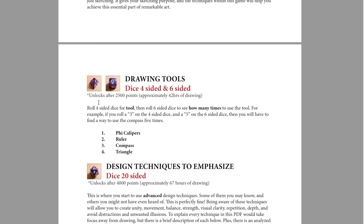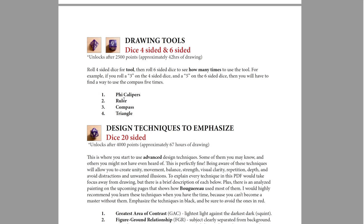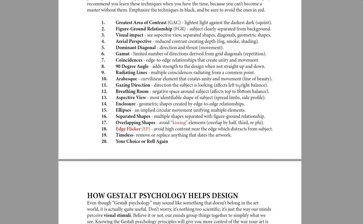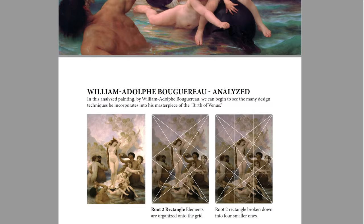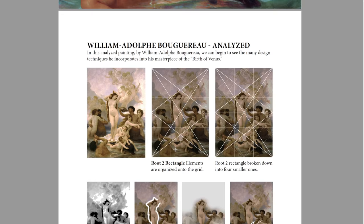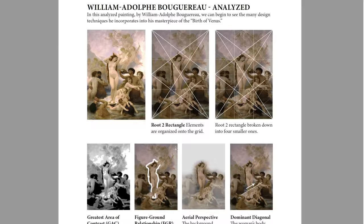We've got drawing tools you can use — phi calipers, ruler, compass, triangle — and all the different design techniques, with a brief description on each. I also go through gestalt psychology principles with a description. To demonstrate what that looks like, I show you an analyzed painting of Bouguereau and show how he used these design techniques.